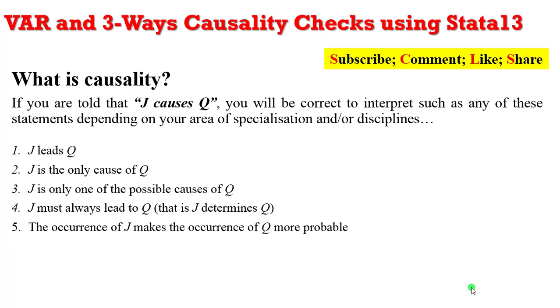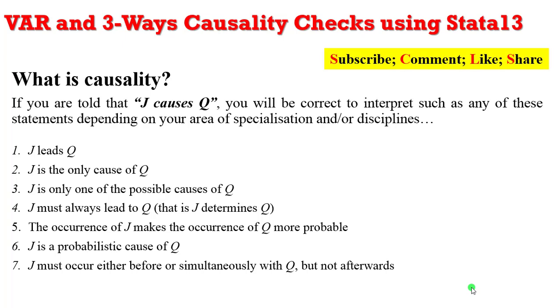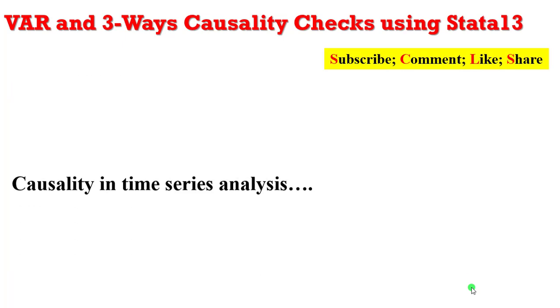The occurrence of J makes the occurrence of Q more probable. J is a probabilistic cause of Q. You can say that J must occur either before or simultaneously with Q but not later. You can say the past values of J forecast future values of Q. Any of these can easily explain that J causes Q.